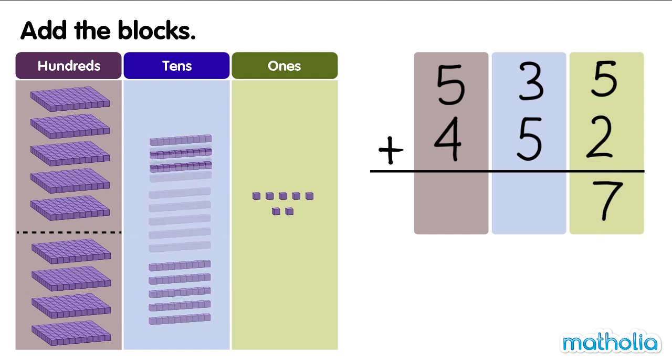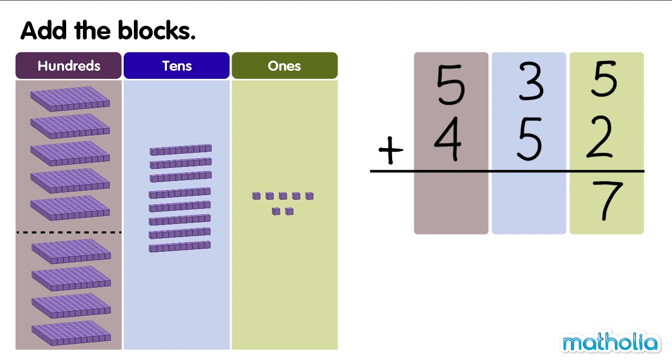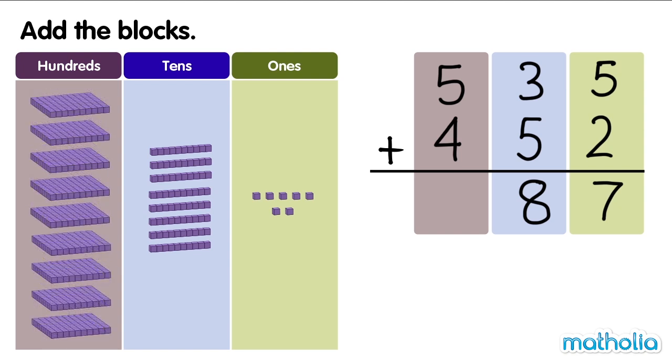Next, add the 10s. 3 10s plus 5 10s equals 8 10s. Finally, we add the 100s. 5 100s plus 4 100s equals 9 100s. There are 987 blocks. 535 plus 452 equals 987.